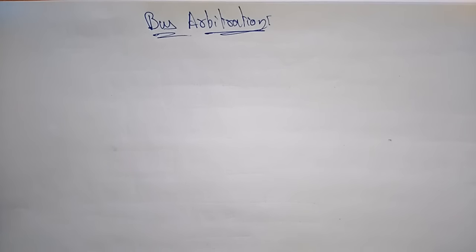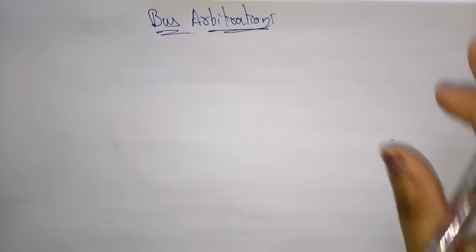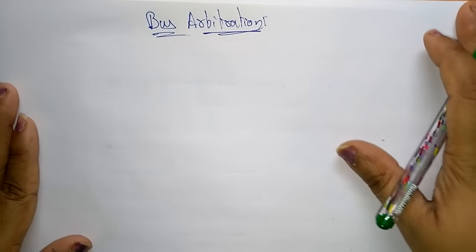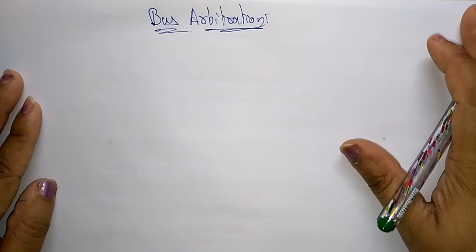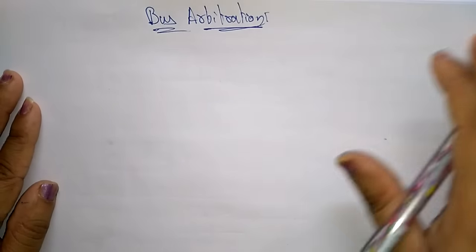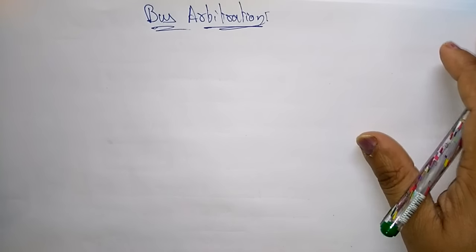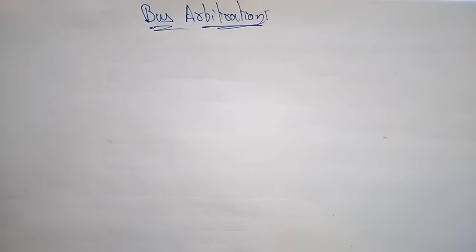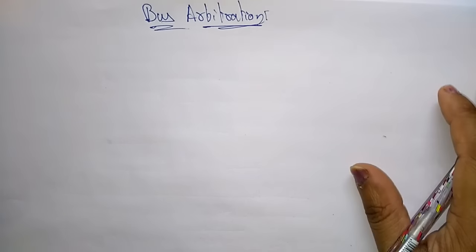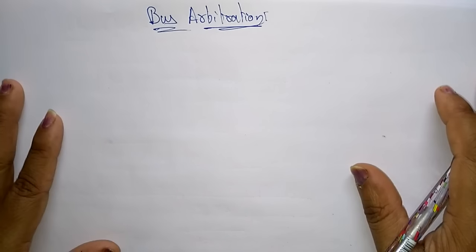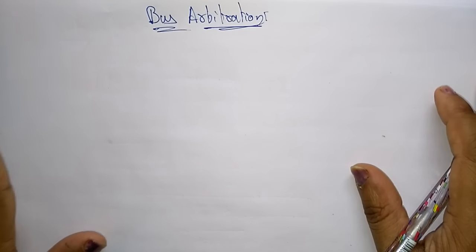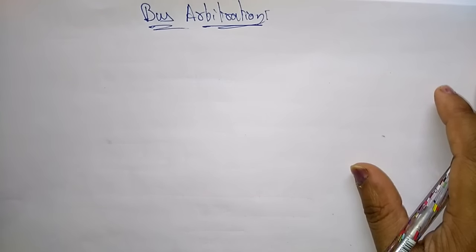Let us continue with computer organization and architecture. In the previous video I explained about bus architecture. Now let us see bus arbitration. Arbitration is deciding who gets access to the bus for reading or writing — for any transaction, who gets access will be decided by the arbitration.